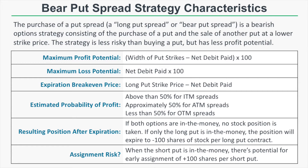The maximum profit potential of a bear put spread is the width of the put strikes minus the debit paid times 100. The maximum loss potential is the net debit paid. With a put spread, since we're selling another put against the long put, we'll have a debit that's smaller than just buying the put outright, and therefore a lower loss potential. The expiration break-even price is the long put's strike price less the debit paid.